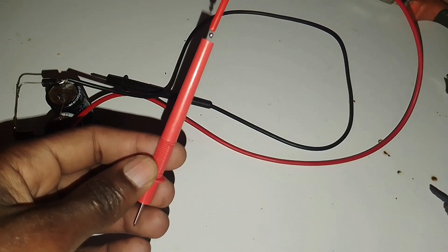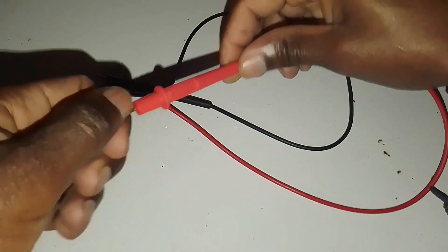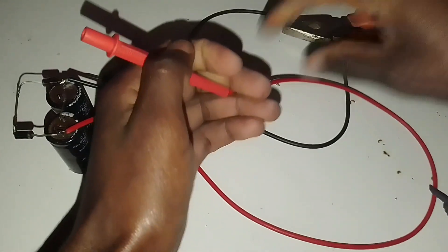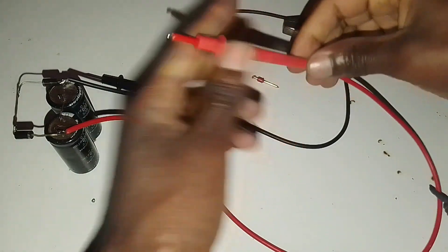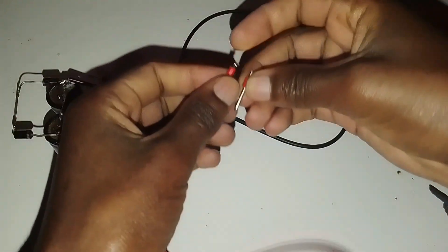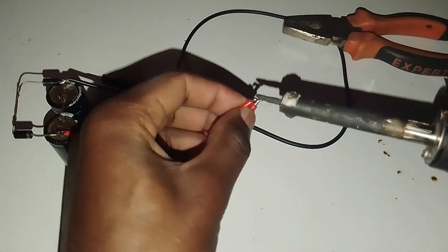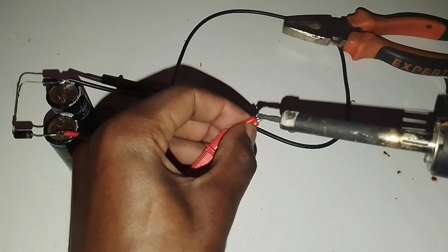Then solder this one. We need to add something on the positive lead and that is a switch. I'm going to use a push button, so I can mount it over here.